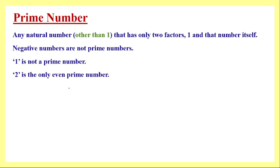Now, how do we check in mathematics whether a given number is prime or not? Take the example of 17. We check its divisibility. Since every natural number is divisible by one, we start from two. If we divide 17 by 2, the quotient is 8 with remainder 1, so 17 is not divisible by 2. We then increase the divisor by 1 to get 3.